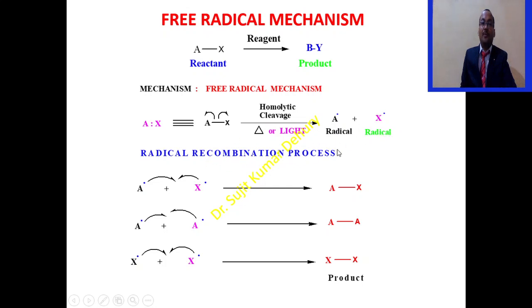During the radical recombination process, A dot and X dot can recombine to give rise to again A-X bond, or A dot and A dot can recombine to give A2 molecule, and X dot and X dot can recombine to give rise to X2 as product.